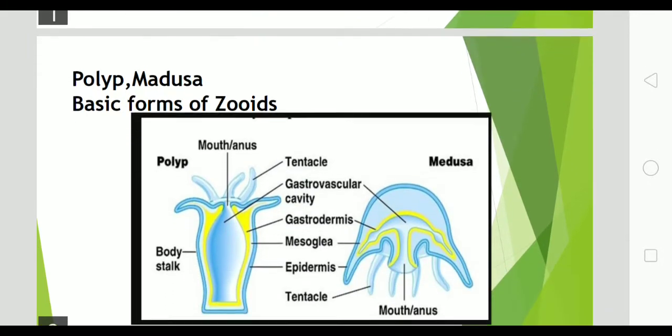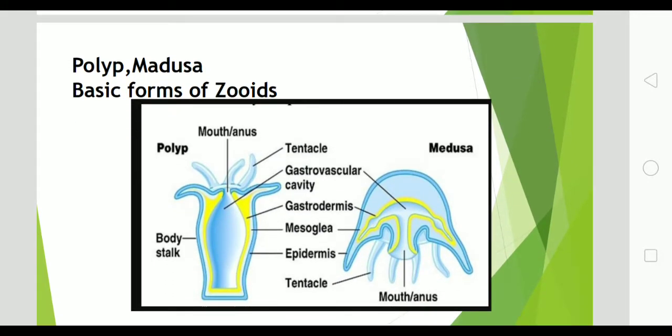In this diagram you see polymorphism and medusa. These two are the basic forms of zooids. The polyp zooid is cylindrical. One end is attached to the substratum or attached to the main stem of the colony. The other free end has a mouth, which is encircled with tentacles.